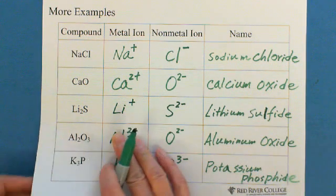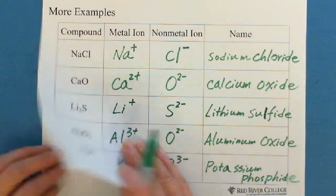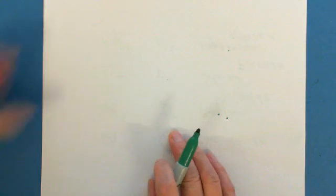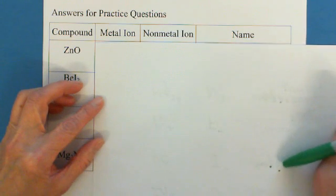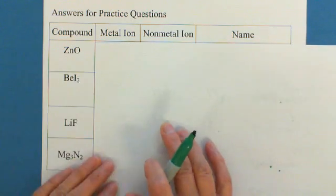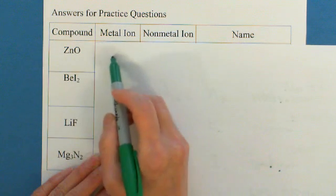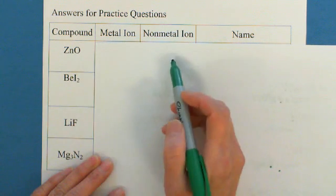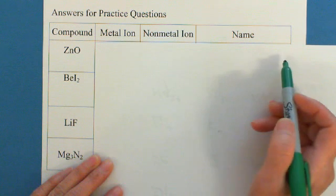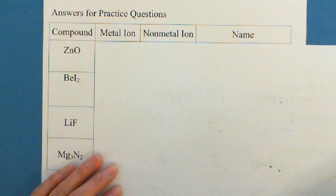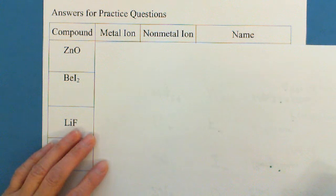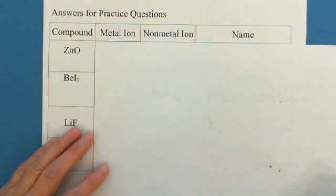Next, I have some practice questions, that you practice. And the practice questions, you can pause video, then practice by your own, write metal ion, nonmetal ion, and naming them. And later, you can look at the answer, to see if your answer is correct.